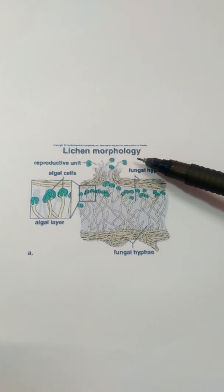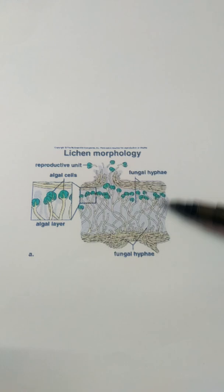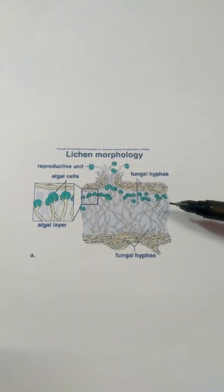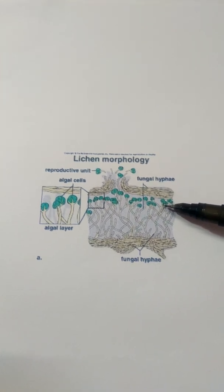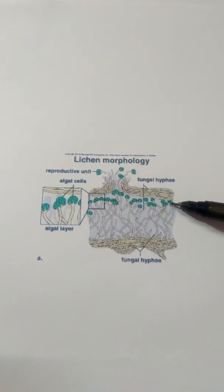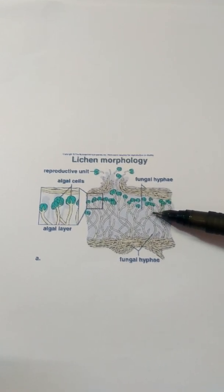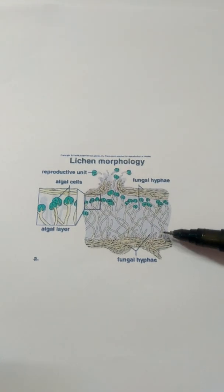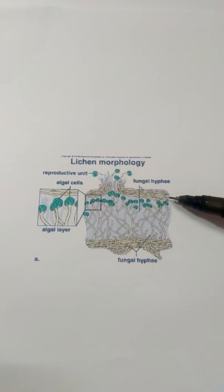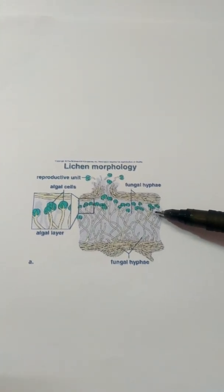Lichen morphology: the fungal partner produces the outer and inner layers of the Lichen. The flat body has a green-colored algal zone where algal cells are located. These cells are attached by specialized fungal hyphae called appressoria, which insert into the algal cells and absorb prepared food material, while providing moisture and minerals to the algal partners. More than 90% of the Lichen is made from the fungal partners, and about 10% from the algal partners.